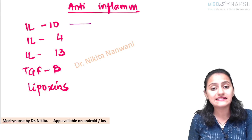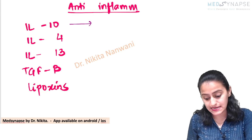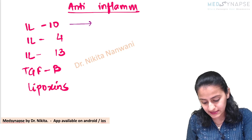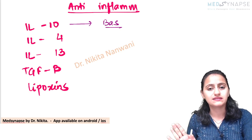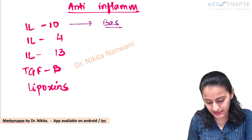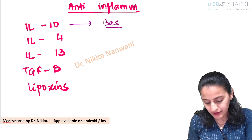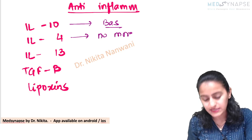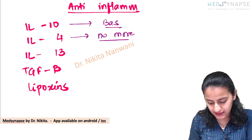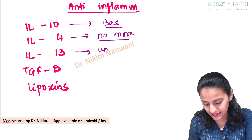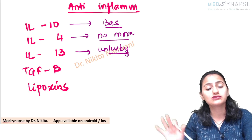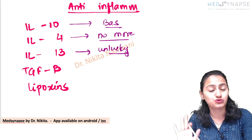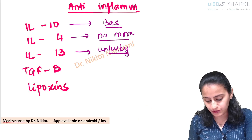How do you remember them? Interleukin 10 — in Hindi, 'bas' means stop, so IL-10 says 'bas karo' to the inflammatory cascade — stop it. IL-4 says 'no more' inflammation. And 13 is the unlucky number, so it's unlucky for inflammation too — the inflammation has to stop and give way in front of 13.